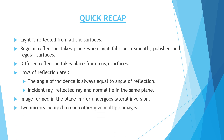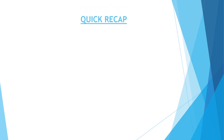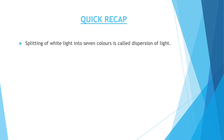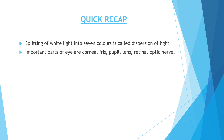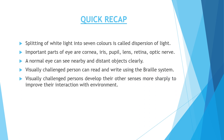Two mirrors inclined to each other give multiple images. Sunlight is called white light, but it actually consists of seven colors. Splitting of white light into seven colors is called dispersion of light. The important parts of the eye are the cornea, iris, pupil, lens, retina, and optic nerve. A normal eye can see nearby and distant objects clearly. Visually challenged persons can read and write using the Braille system and develop their other senses more sharply to improve their interaction with the environment.